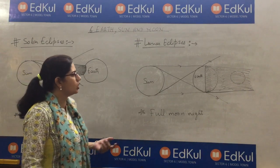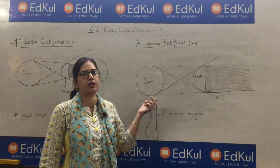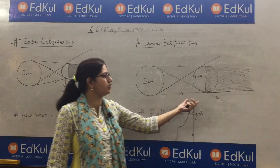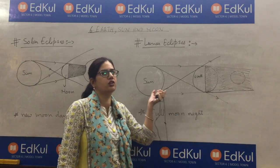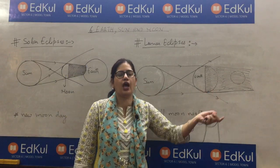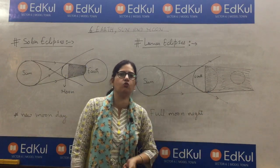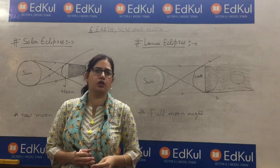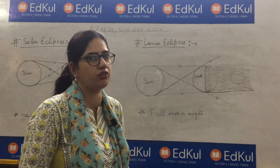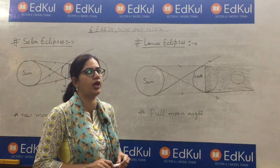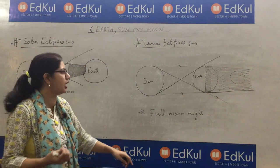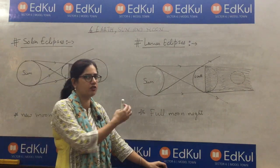Now, what is lunar eclipse? A lunar eclipse occurs when the earth comes between the sun and the moon. As you all know, the moon does not have its own light — it only reflects the light of the sun.